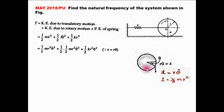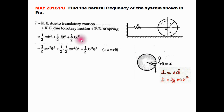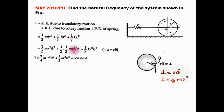The potential energy of the spring is half k·x². When the disc rotates by angle theta, the arc length x equals r·theta. Differentiating, x_dot equals r·theta_dot. The mass moment of inertia of the disc is half m·r². Substituting these values and reducing the equation, we get: half m·r²·theta_dot² plus one-quarter m·r²·theta_dot². Since 1/2 plus 1/4 equals 3/4, we combine these terms plus the spring term.